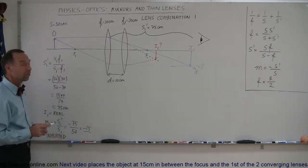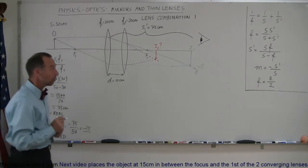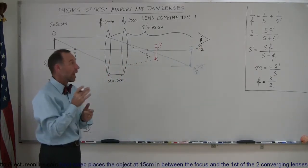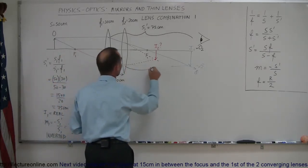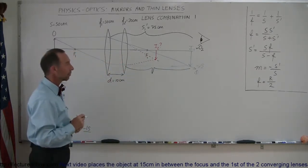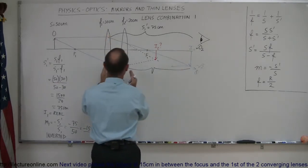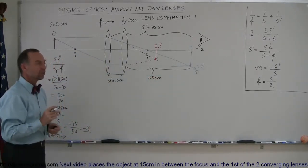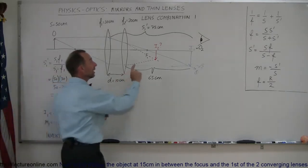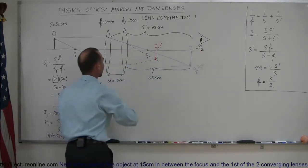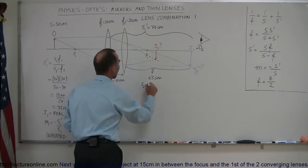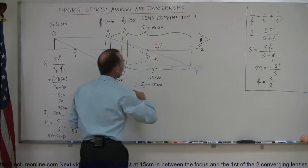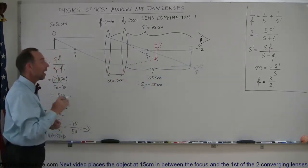Now we're ready to find the second image. Image one becomes the object of the second lens — the image of the first lens acts as if it's the object of the second lens. This means this distance is now the object distance of the second lens. That distance would be 75 centimeters minus the 10 centimeters between the two lenses, giving 65 centimeters. However, the object distance is actually minus 65 centimeters because it is behind the second lens — to the right of the lens instead of the left. So S2 equals minus 65 centimeters.